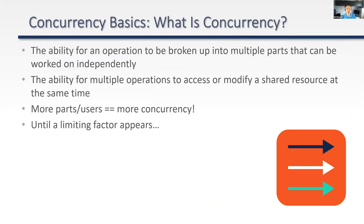So what is concurrency? Concurrency is the ability for an operation to be broken up into two different parts that can be solved independently of each other. Once we're solving things independently, we have a problem where shared resources may need to be accessed at the same time by different operations. The more users and shared objects involved, the more concurrency problems can appear.